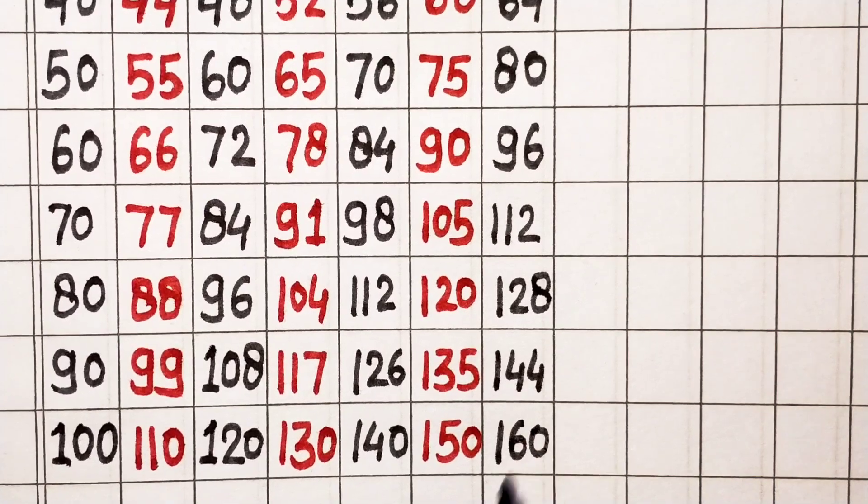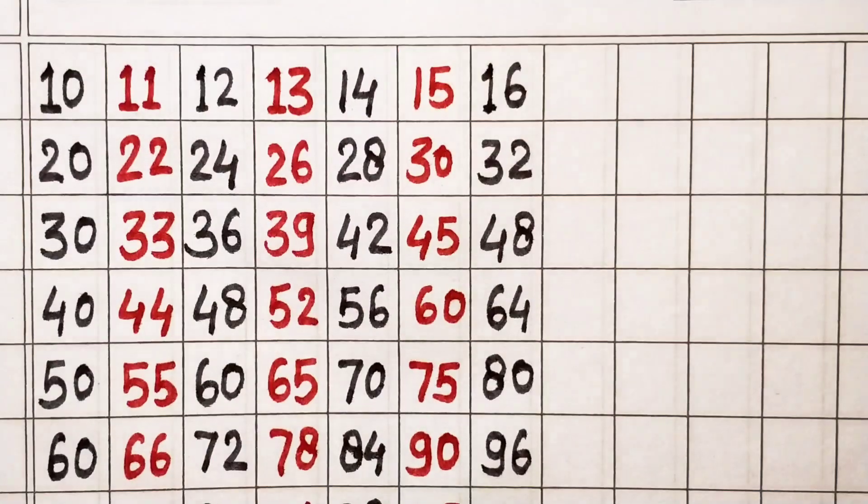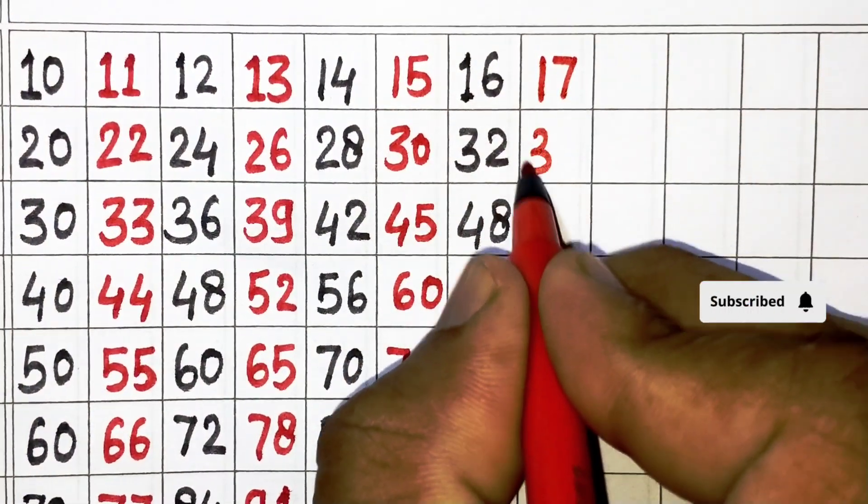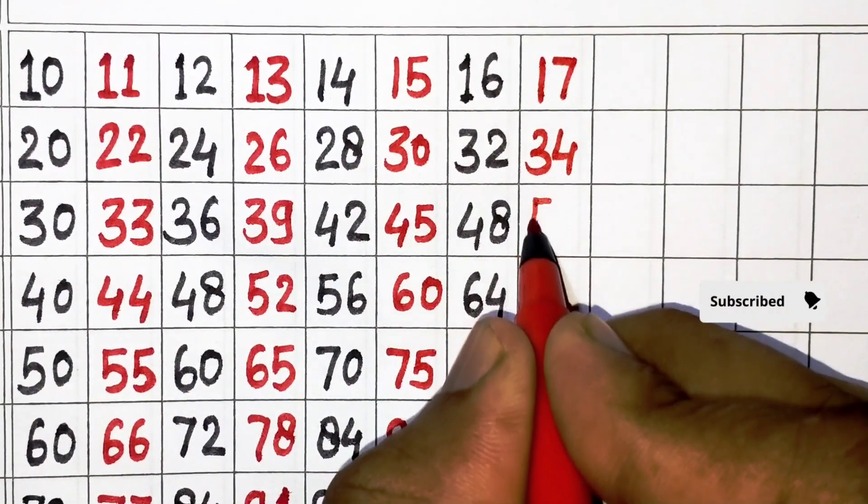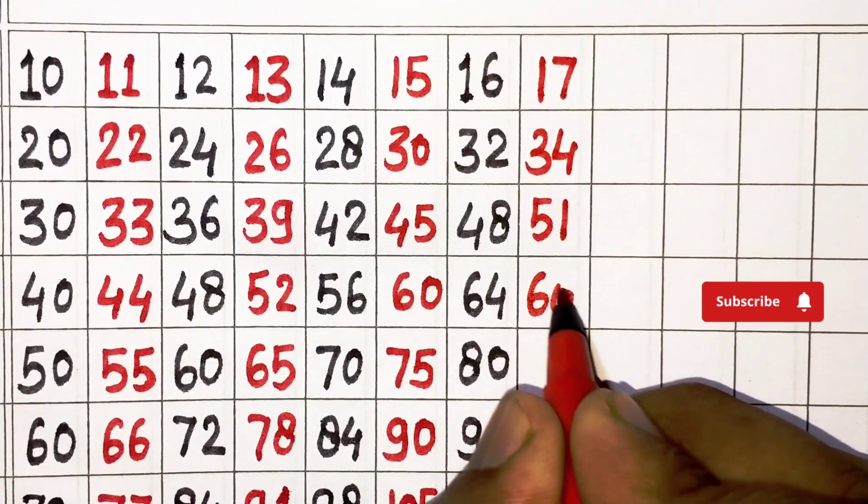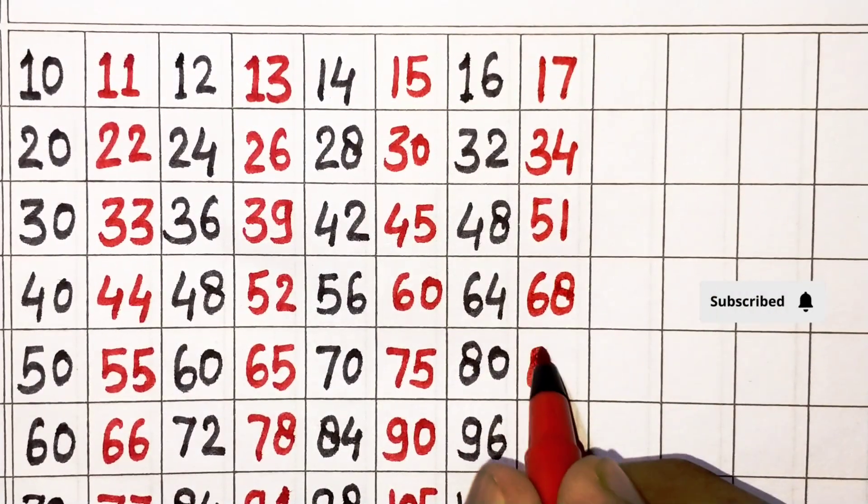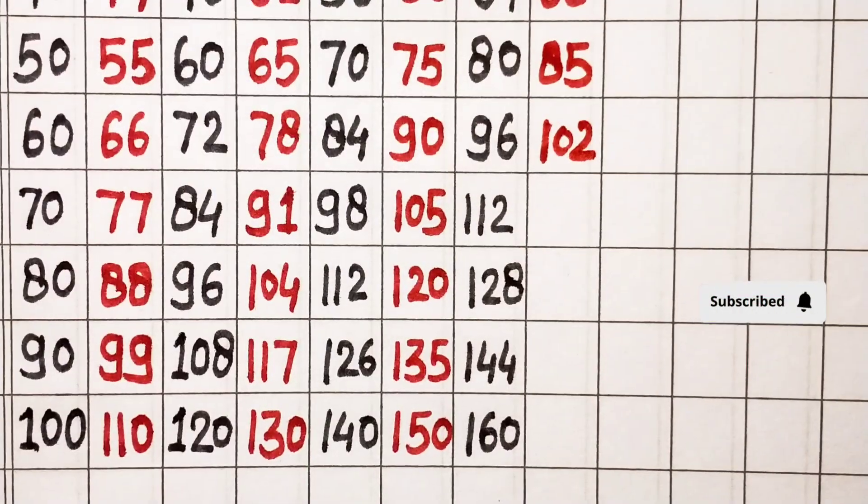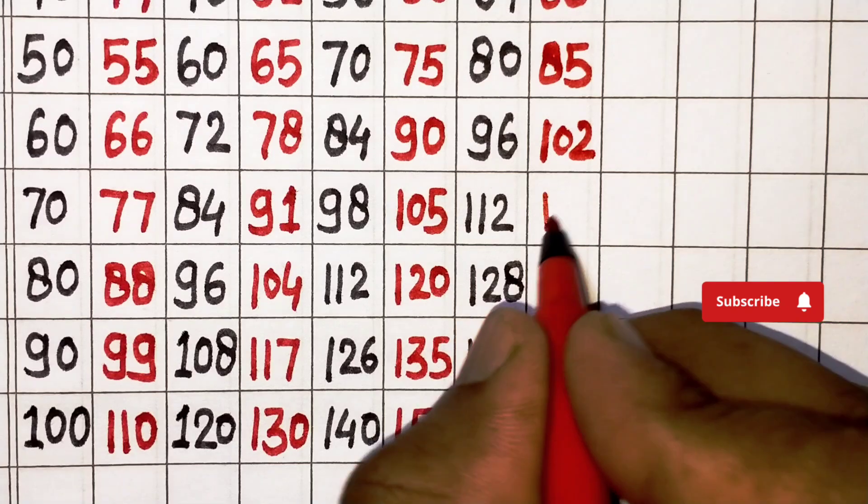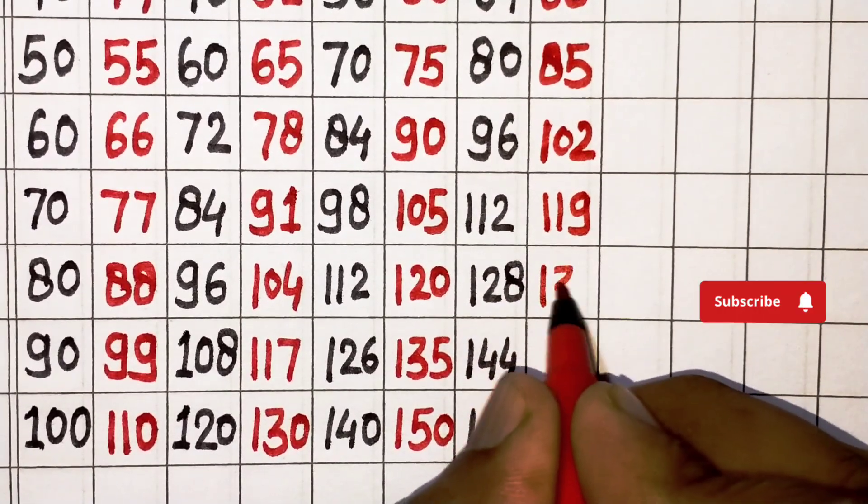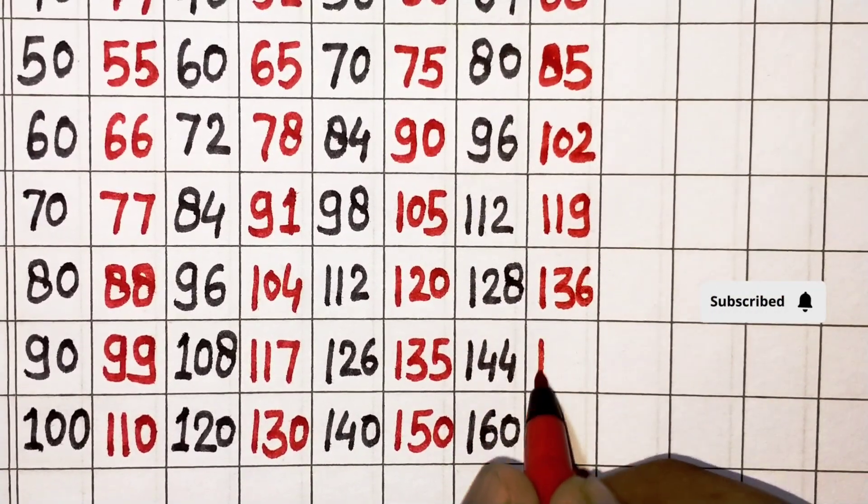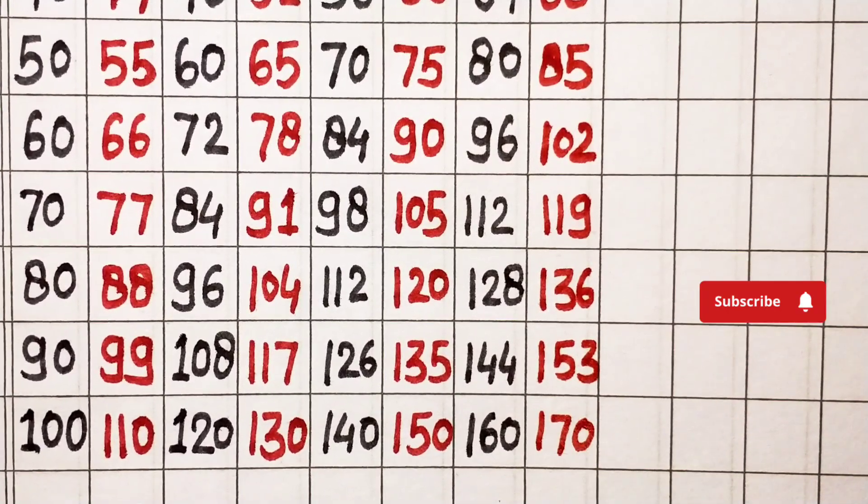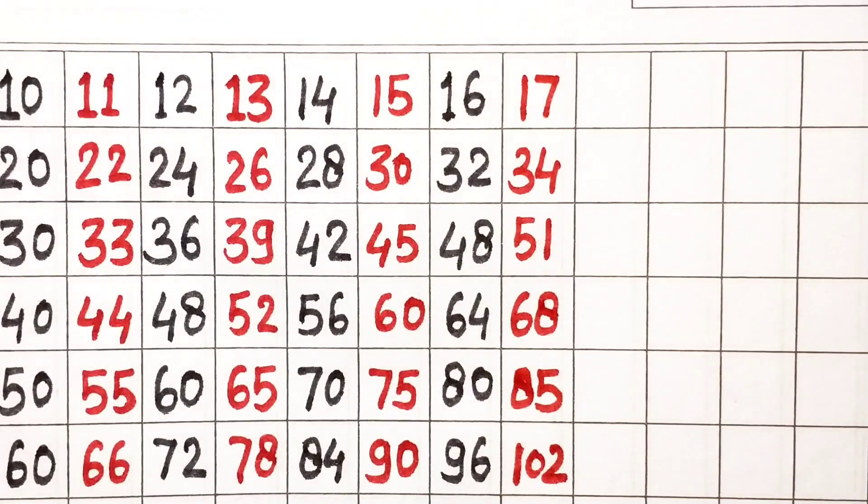Next, 17. 17 ones are 17, 17 twos are 34, 17 threes are 51, 17 fours are 68, 17 fives are 85, 17 sixes are 102, 17 sevens are 119, 17 eights are 136, 17 nines are 153, 17 tens are 170.